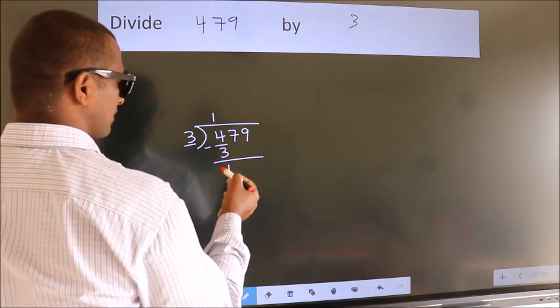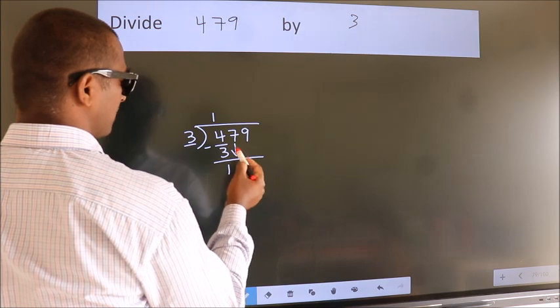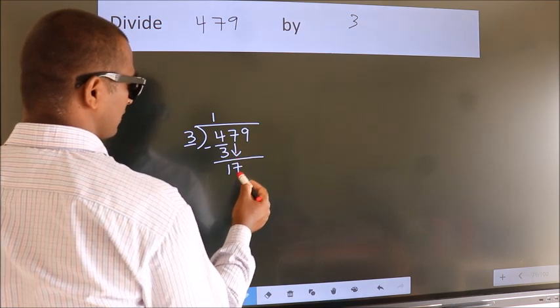After this, bring down the beside number. So 7 down. So 17.